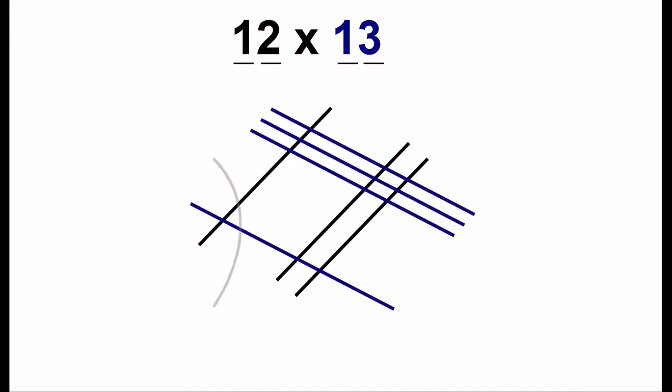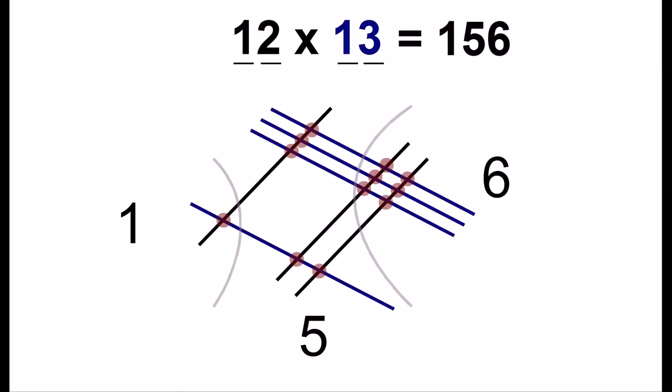Now we'll group together different lines and count the dots. Here we have six different dots. In the middle, we have five different dots. And on the other side, we have one dot. And that's the answer, 156.